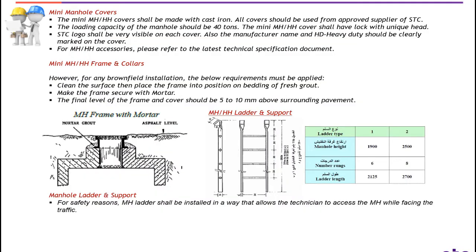Mini manhole covers. Number one: mini manhole and handhole covers shall be made with cast iron. All covers should be used from approved STC suppliers. Number two: loading capacity of manhole should be 40 tons. The mini manhole handhole cover shall be locked with a unique head. Number three: STC logo shall be very visible on each cover. Also the manufacturer name and HD — which means heavy duty — should be clearly marked on the cover. Number four: for manhole handhole accessories, refer to the latest technical specification document.